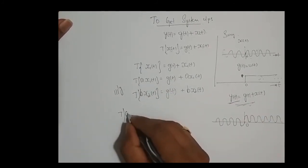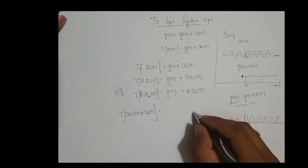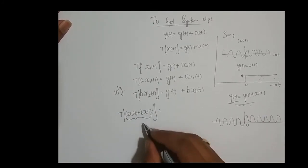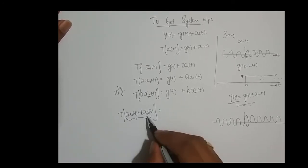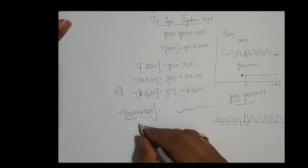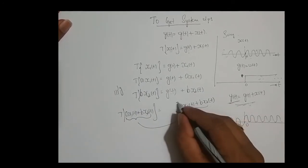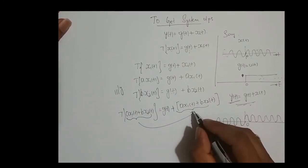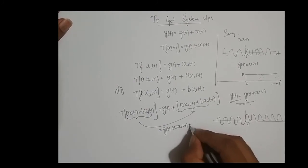Now if I combine these two — a times x1 of t plus b times x2 of t — as a whole this is one signal which I feed to the system. So for that combined signal, g of t gets added. If I simplify it, the system output is g of t plus a times x1 of t plus b times x2 of t. This is equation 2 — the actual system output.